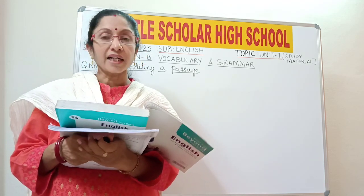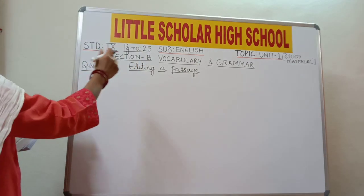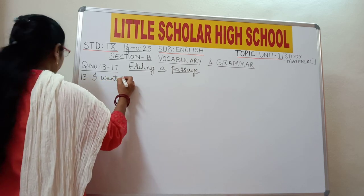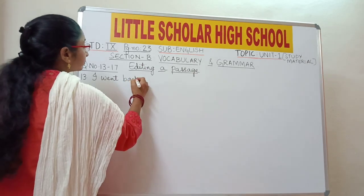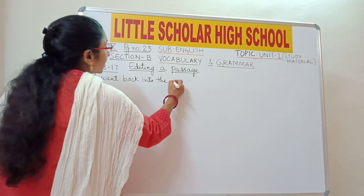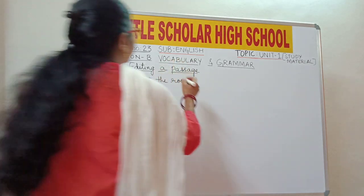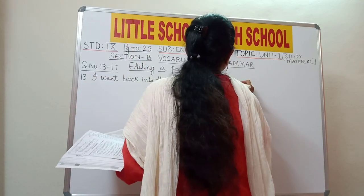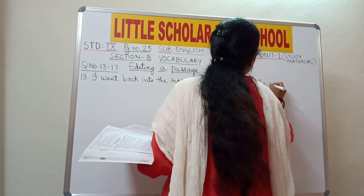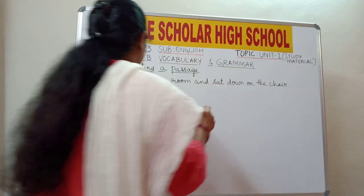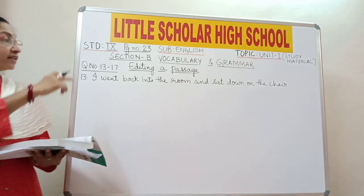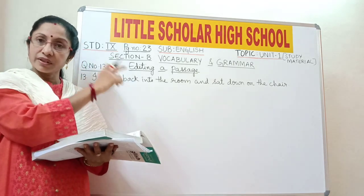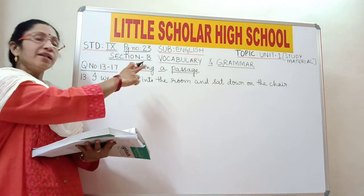So you have to write: 'I went back into the room and sat down on the chair.' For question number 13, in place of 'sit,' you should write 'sat' — the past tense of sit — sat down on the chair. Since 'went' is in past tense, 'sit' changes to 'sat.'